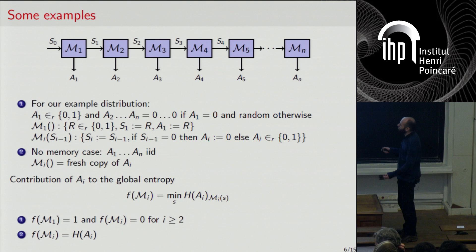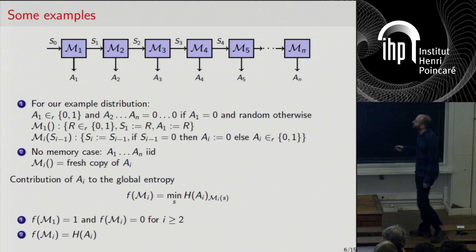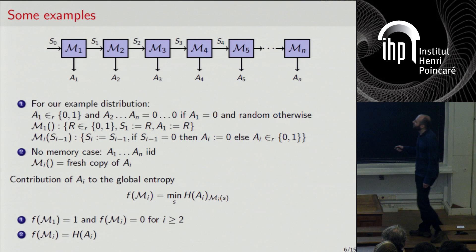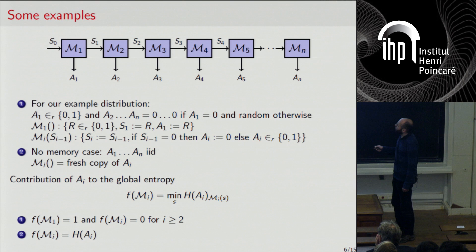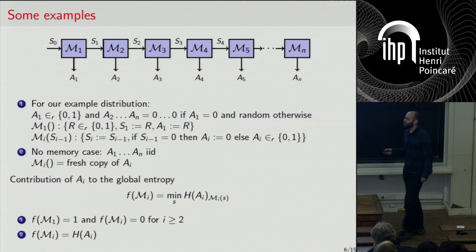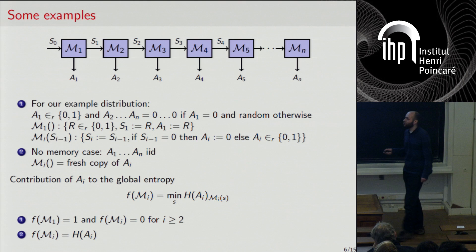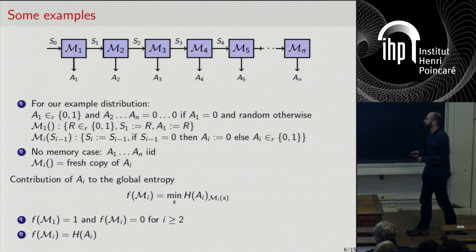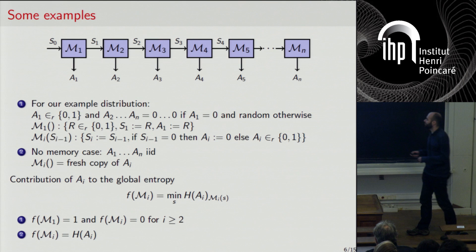Another important special case is when A_1 to A_n are IID — independent and identically distributed. In these examples I'm thinking of the systems as classical; later we'll see the quantum case. In the IID case there is no memory at all — the S_i systems are all trivial — and what the maps M_i are doing is just generating a fresh copy of A_i according to the correct marginal distribution.